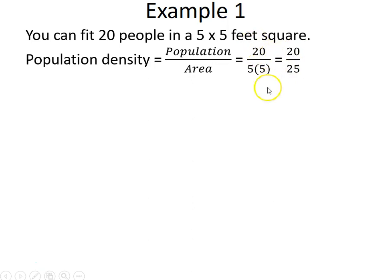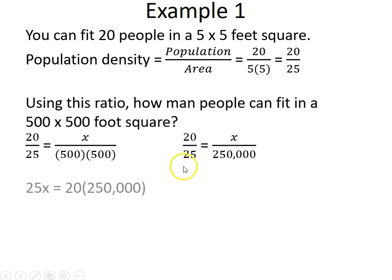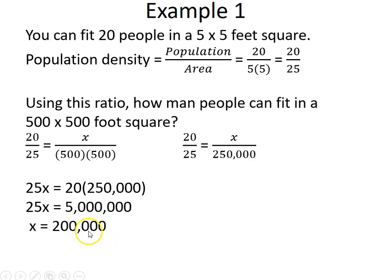Using this ratio, we set up a proportion to find how many people fit in a 500 by 500 foot square. That's 20 over 25 equals x over 250,000. We cross multiply: 20 times 250,000 and x times 25. So 25x equals 5,000,000, and dividing gives us 200,000. Based on the ratio of 20 to 25, we can fit 200,000 people in a 500 by 500 foot square.